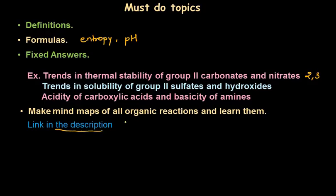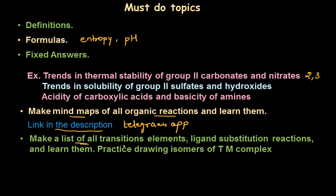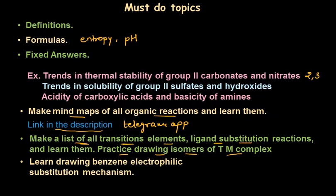There is a link in the description — you need the Telegram app to access it — giving free access to mind maps of reactions of benzene and substituted benzene, reactions of carboxylic acids, and nitrogen compounds such as amines. Next, make a list of Transition Elements reactions — for example, ligand substitution reactions — and just learn them. Also practice drawing isomers of transition metal complexes, because drawing isomers of transition metal complexes is asked every time and you can get full marks on such topics.